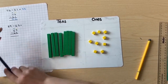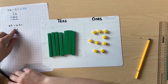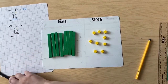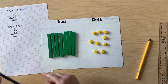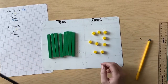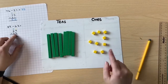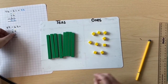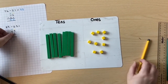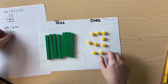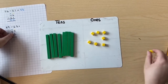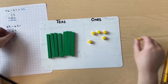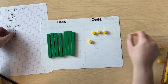Can you remember which column we start with — do we start with our tens or our ones? We start with our ones. So we have 9 and we're taking away 5. Let's count out 5 to take away: 1, 2, 3, 4, 5.